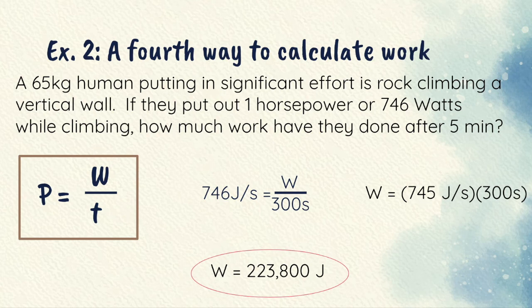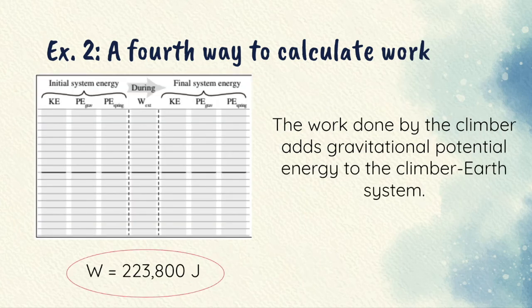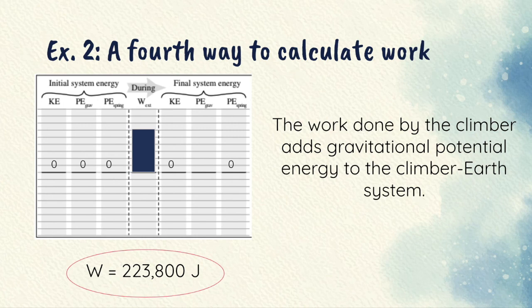The work is positive because it's adding energy to the system. When a person rock climbs, they start with zero energy at the bottom, so unmoving, not up the wall, not being compressed by a spring. Then, they do 223,800 joules of work. They stop at the top, so there's no potential, or no spring and no kinetic. Only gravitational potential. The work that the climber has done adds gravitational potential energy to the climber-Earth system.